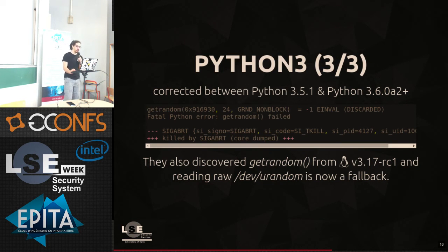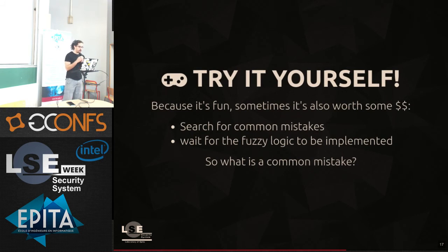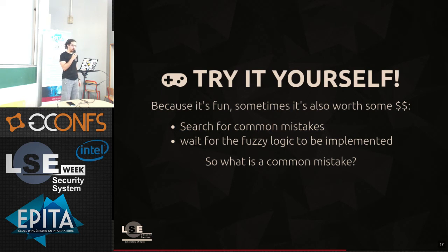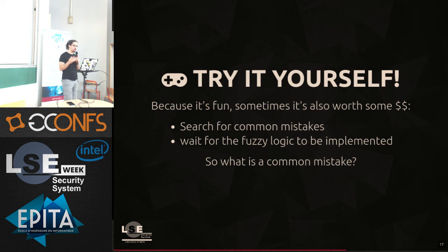They also discovered getrandom from Linux 3.17, and reading the road — /dev/urandom is now a fallback. You will be able to try this at home sooner or later, as soon as the code will be upstream. I invite you to do so because it's fun — it may even earn some dollars if the project you are targeting has a bug bounty or something like that, and you'll contribute to the overall software robustness.